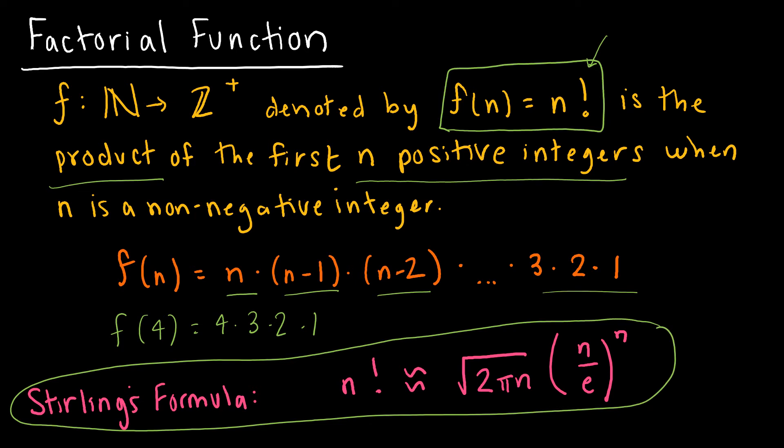We're not going to use it a ton right now, but this is a way, because that factorial function gets very large very quickly, this is an approximation that we can find of the product of the numbers of n factorial.